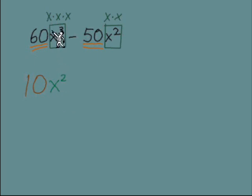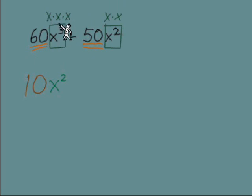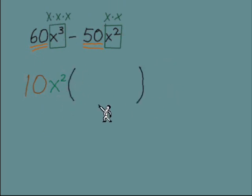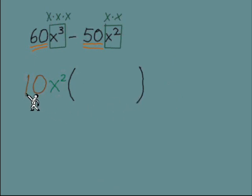Be cautious — it looks like we took two from the first term and two from the second term, like a total of four. But it's not about the total; it's about how many we can take from each place. From each place we can take two, so it's x² in the GCF. Now we have the set of parentheses and we think about what terms we need inside.